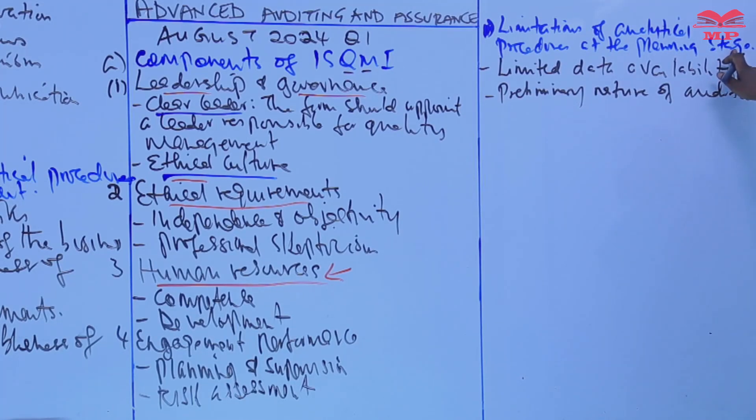So the auditor's understanding of the client's business and the industry may be limited, and that can make it difficult to identify relevant benchmarks or even expected results for analytical procedures. Because other than just coming up with the ratios, the auditor needs information about the industry which is necessary to improvise.